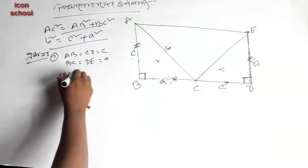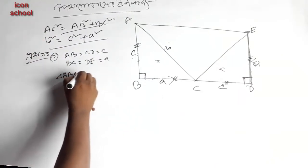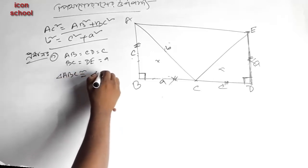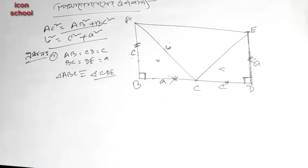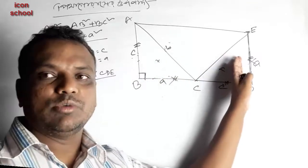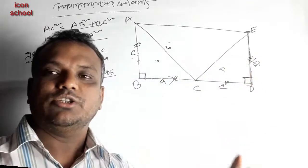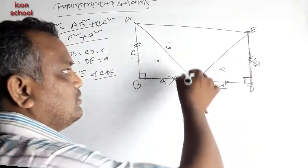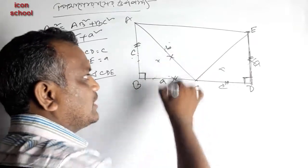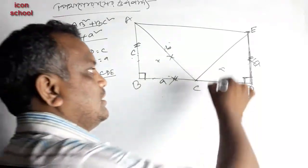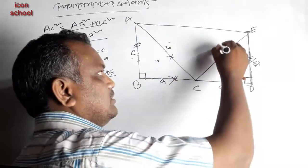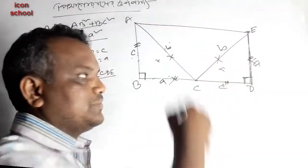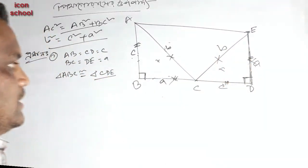A, B, C, C, D, E. Can you answer that? A, B, C, C, D, E. Yes. A, B, C, C, D, E. Clear, okay.